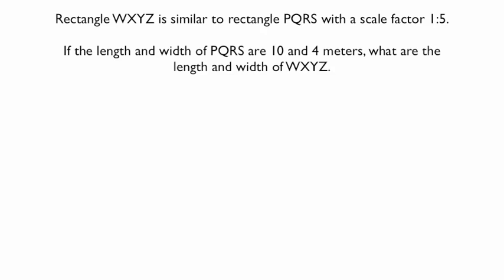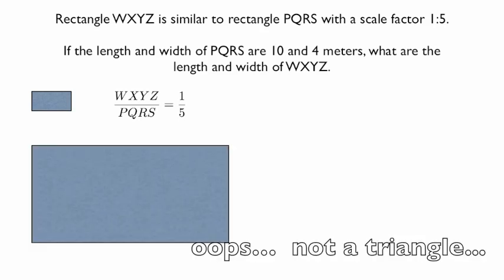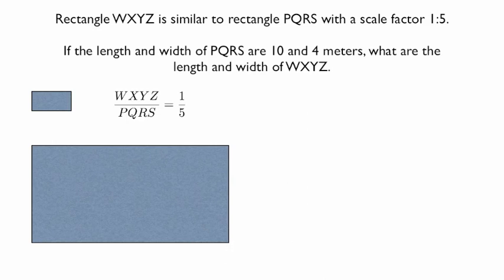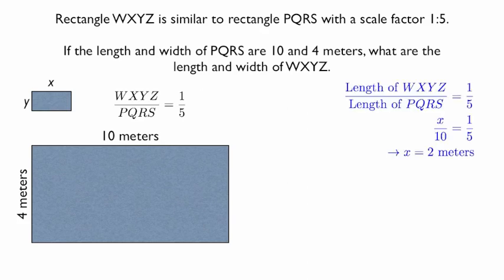Next, there's no picture with this one. We have two similar rectangles, WXYZ and PQRS, and they have a scale factor of 1 to 5. What that means is that any measurement in WXYZ and the same measurement in PQRS must be 5 times larger. PQRS must be 5 times larger in every measurement. If we have the length and width of PQRS, which is the larger of the two rectangles, we have 10 meters and 4 meters, and we want to find the length and width of the smaller rectangle.